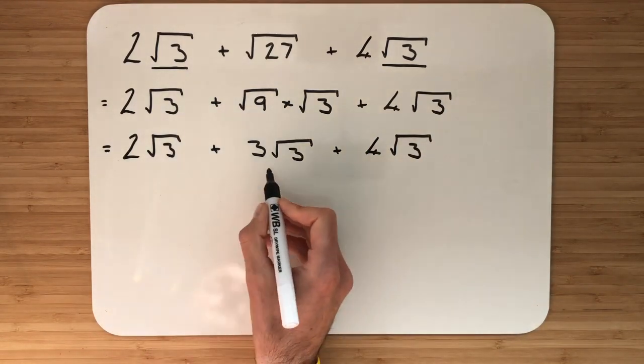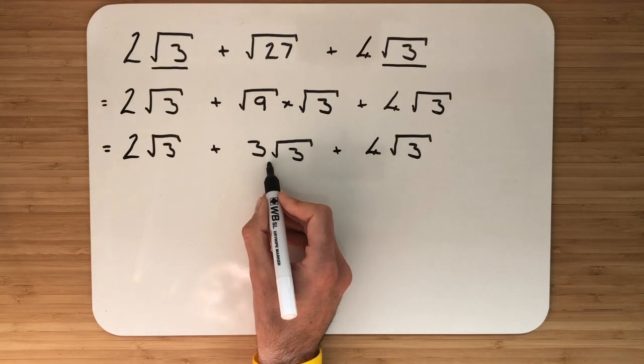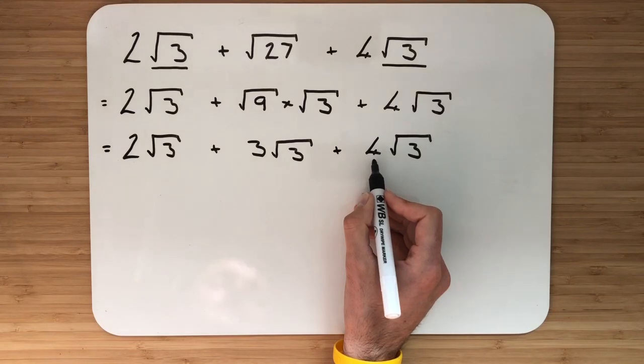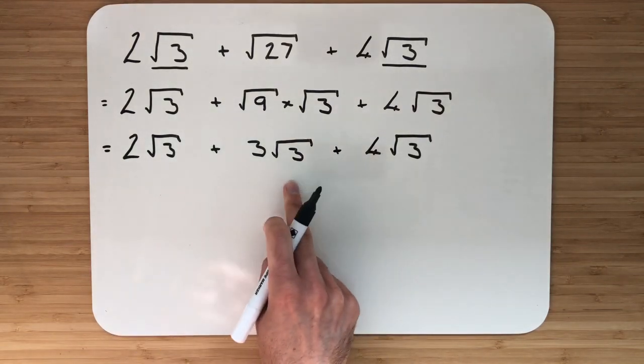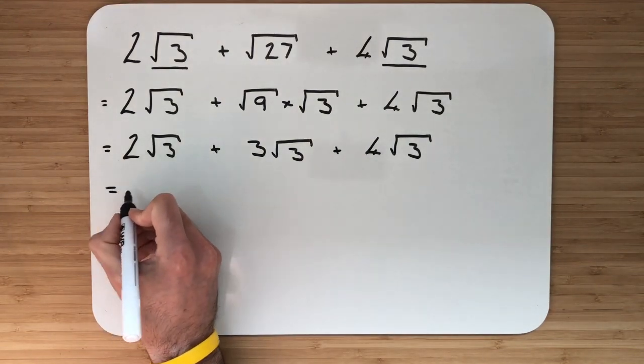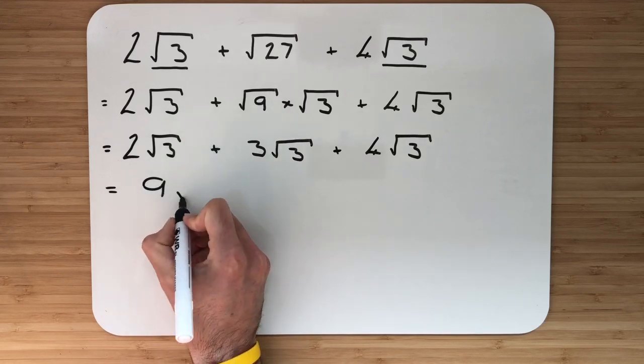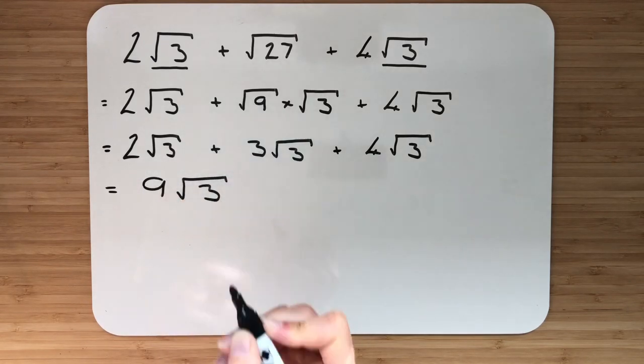So 2√3, add 3√3. That gives me 5√3. Then you'll add on 4√3. So 5√3, add 4√3. The final answer is 9√3.